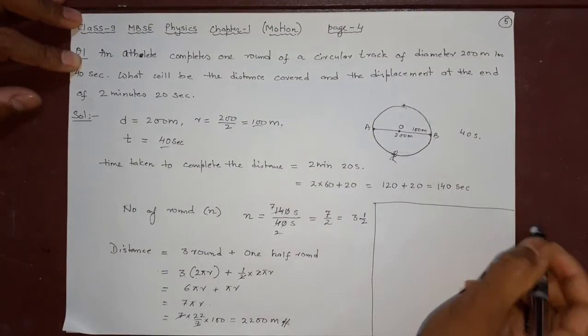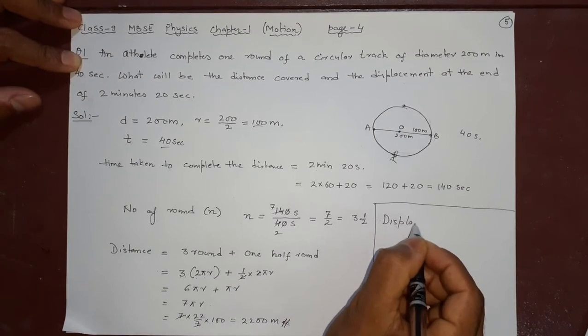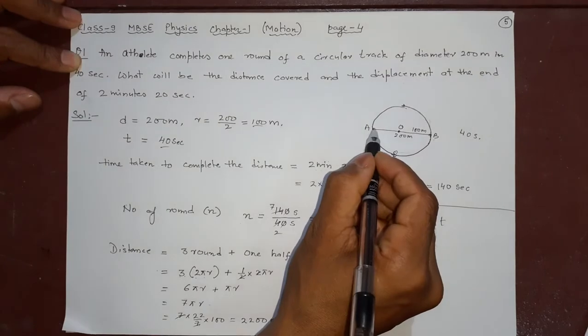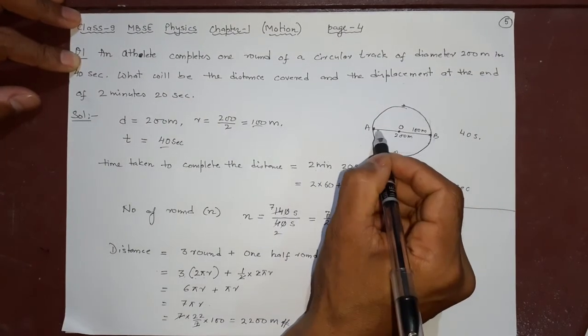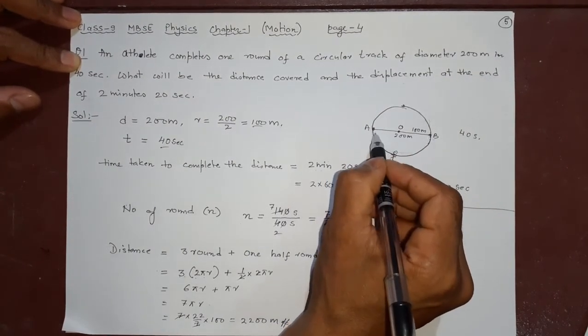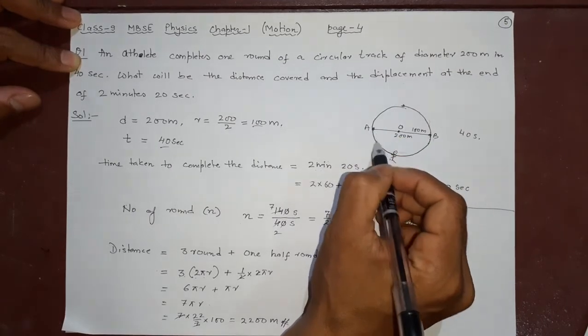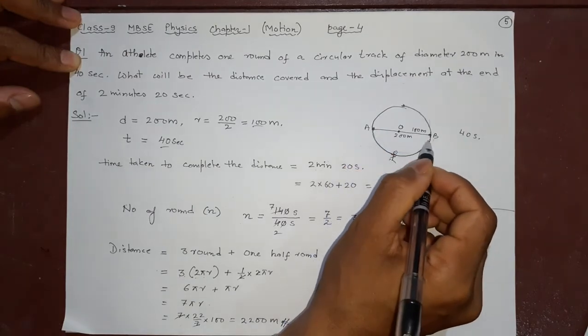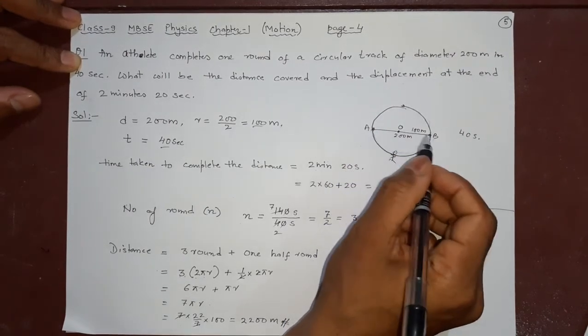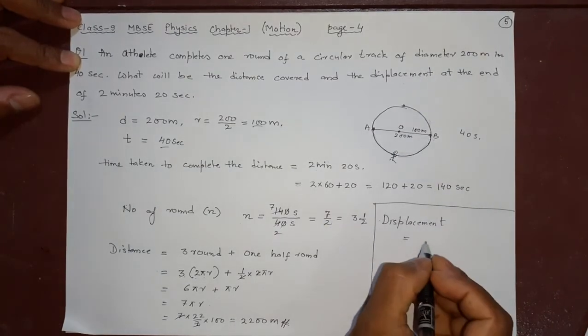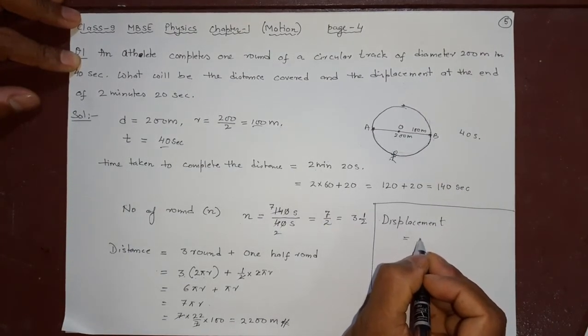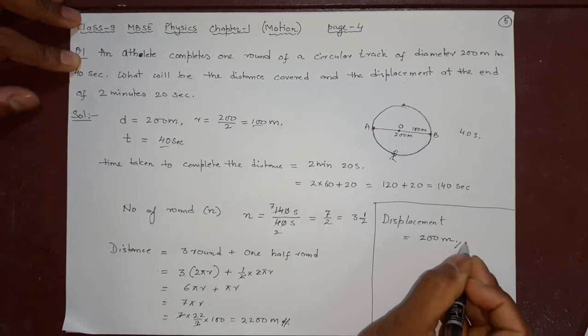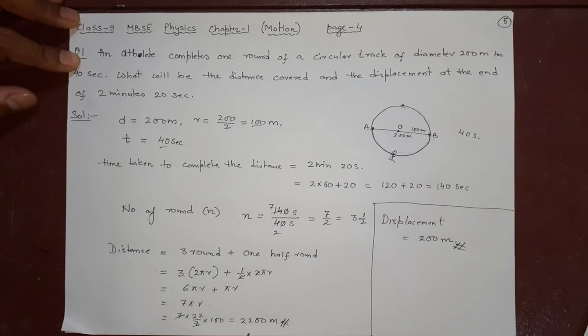Now we will write the displacement also. What is displacement? Displacement is only initial and final position, how far the object is from initial to final. Suppose I start, 1 round, 2 rounds, 3 rounds and half round. That means from initial to final, I am only 200 meters away. So after all the rounds, you have only 200 meters in displacement.